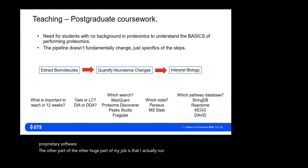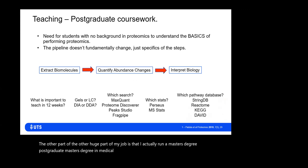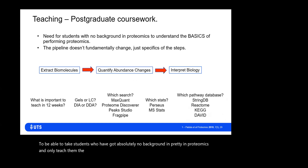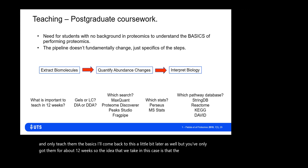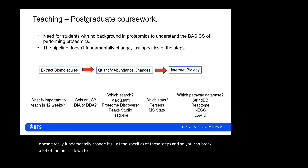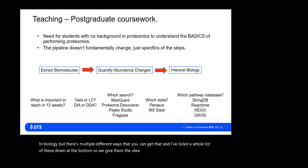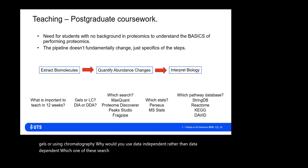I also run a postgraduate Master's degree in medical biotech where one subject is proteomics. We need to take students with absolutely no background in proteomics and teach them only the basics in about 12 weeks. The idea is that the pipeline itself doesn't really fundamentally change — it's just the specifics of the steps. You can break a lot of omics down to: extraction of biomolecules, quantify abundance changes, then interpret them biologically. But there are multiple different ways to achieve that — gels vs. chromatography, DIA vs. DDA, which search engine, which stats package.